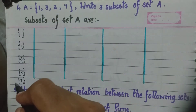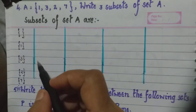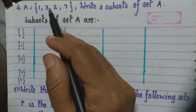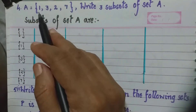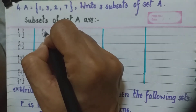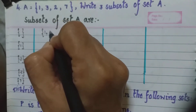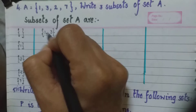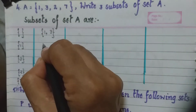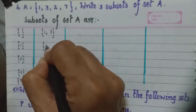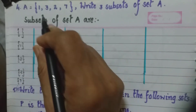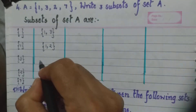There were only three asked, but let us list all of them if possible. We have written the single-element subsets. Now we will take subsets with two elements. So we have {1, 3}, then {1, 2}, then {1, 7}.